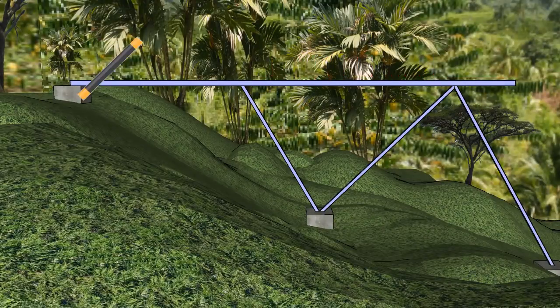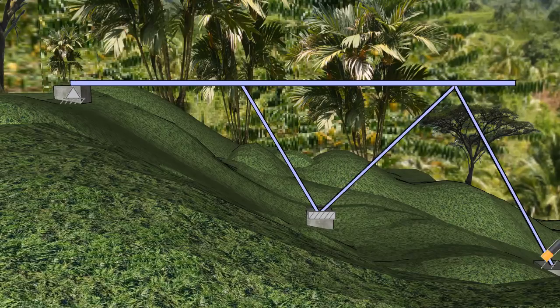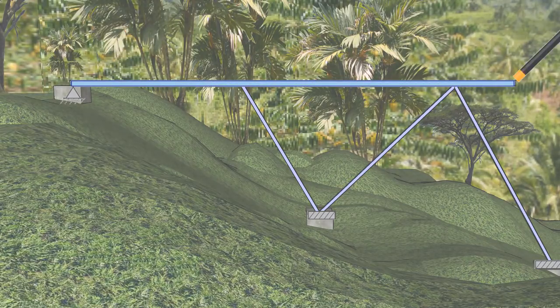We consider the left end of the horizontal beam as a pin support. The other two concrete blocks act as fixed supports.